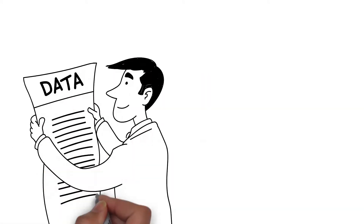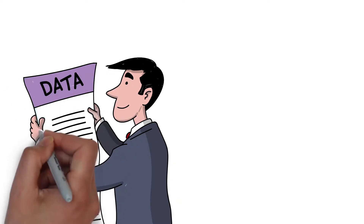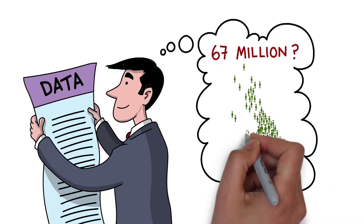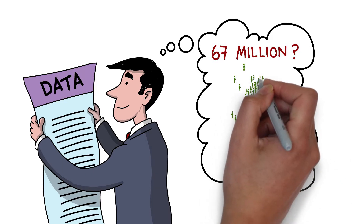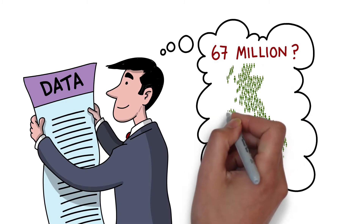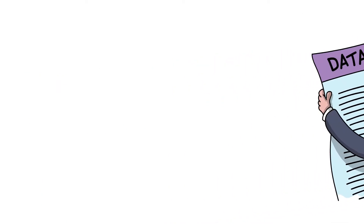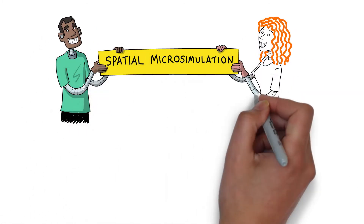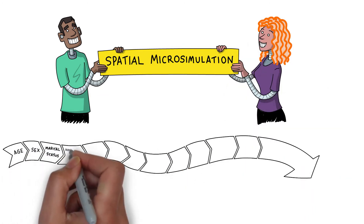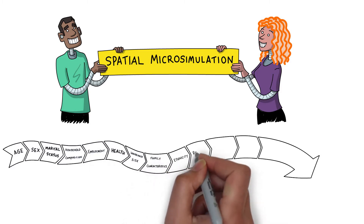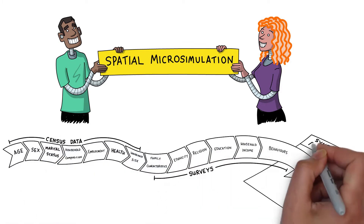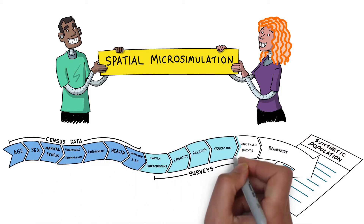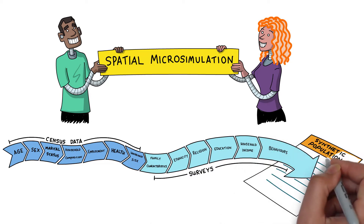This is known as longitudinal data. Survey data are typically only available for samples of a few thousand or tens of thousands of people, not all 67 million people in the UK. So we need a way to use the information from surveys to estimate what the characteristics should look like for the whole population. We use a technique called spatial microsimulation to produce detailed synthetic population data, by aligning attributes such as age, sex and ethnicity that are the same in both the census and surveys. This new synthetic dataset reflects the distribution of characteristics seen in the census and includes additional characteristics from surveys which otherwise would not be available.